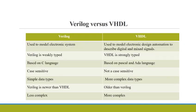Now we are going to see the difference between Verilog and VHDL. Verilog is used to model electronic systems. VHDL is used to model electronic design automation, to describe digital and mixed signals.